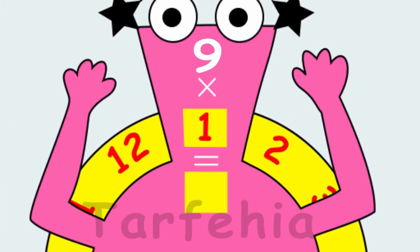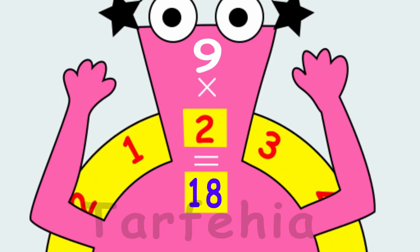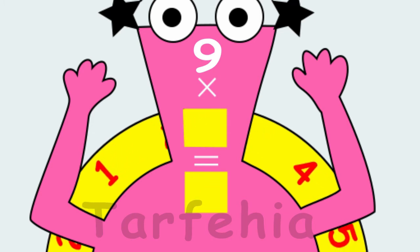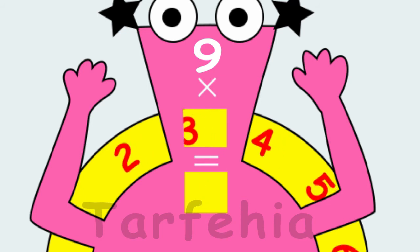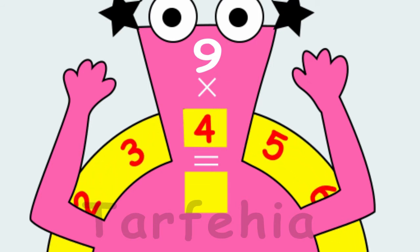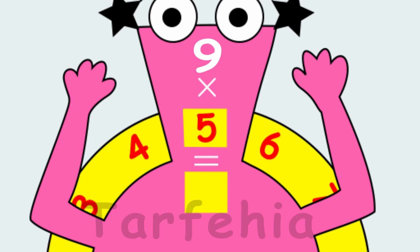9 times 1 equals 9. 9 times 2 equals 18. 9 times 3 equals 27. 9 times 4 equals 36. 9 times 5 equals 45.